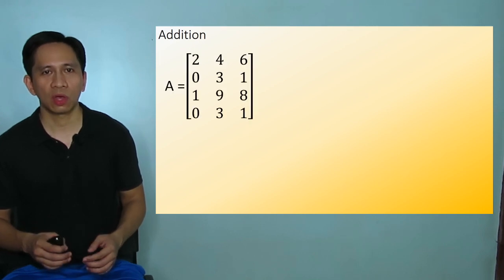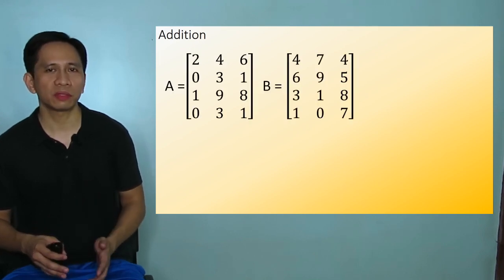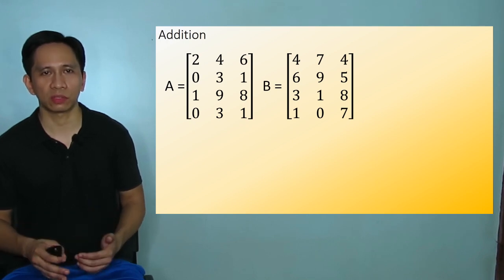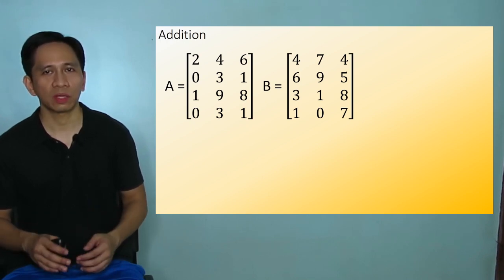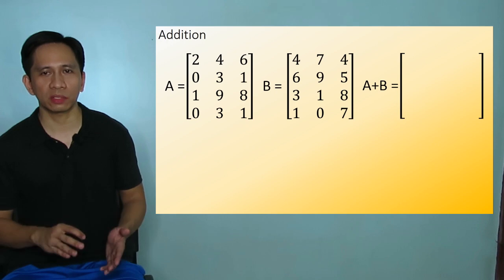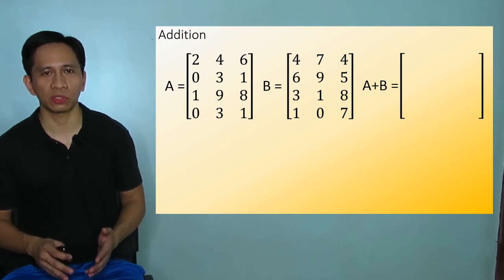To add two matrices, you first need to be sure that they have the same size. For this example, matrix A and B are both 4 by 3 matrices, so we can add them. If not, then the answer is undefined. To get the sum, add each entry from both matrices which are in the same position.